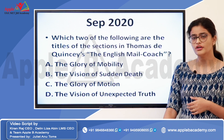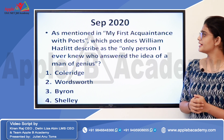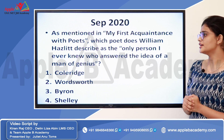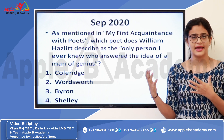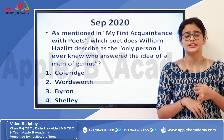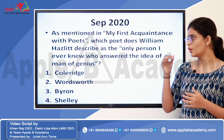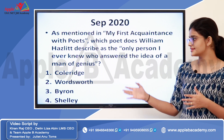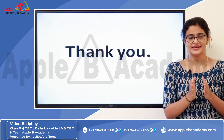Another question from September 2020 was: 'As mentioned in My First Acquaintance with Poets, which poet does William Hazlitt describe as the only person he ever knew who answered the idea of a man of genius?' This question was included to emphasize that non-fiction works are very important — many questions were asked from this genre. As we know, Hazlitt's 'My First Acquaintance with Poets' is about his first encounter with Coleridge, and obviously the answer is Samuel Taylor Coleridge. The answer is option A.